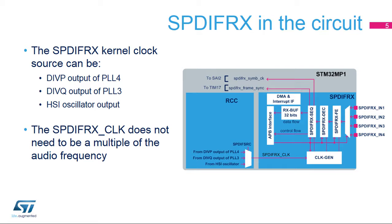In addition, the SPDIF-RX provides two signals: the SPDIF-RX frame sync signal and the SPDIF-RX-SYMB-CK clock. The SPDIF-RX frame sync signal is connected to timer 17, and the application can use it to perform a clock drift estimation between the two audio streams. The signal SPDIF-RX-SYMB-CK is connected to the MUX providing the kernel clocks for the SAI-2, allowing the transfer of samples received by the SPDIF-RX to the SAI-2 without synchronization issues.